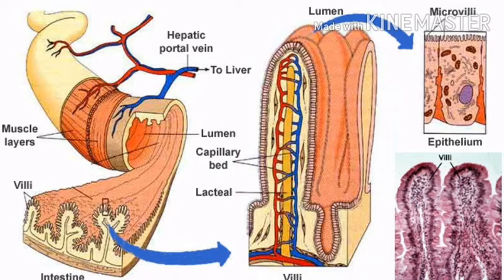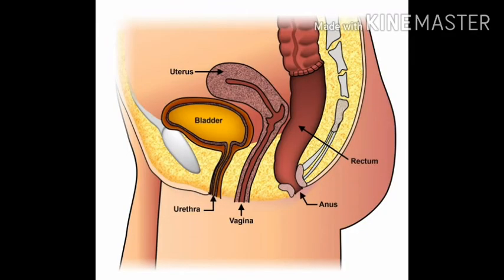After breaking down into this simplest form, food comes to the jejunum and passes to the ileum where major digestion and absorption takes place. The wall of the ileum consists of numerous glands responsible for secretion of intestinal juice. The intestinal juice converts peptides into amino acids, disaccharides into monosaccharides, lipids into fatty acids and glycerol, and nucleic acids into nucleotides. The smallest and simplest form of food is prepared here.